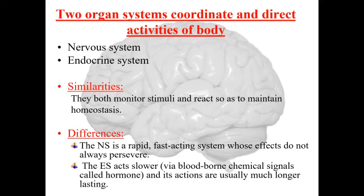These two systems react to maintain homeostasis. What is the difference between the nervous system and endocrine system? The nervous system is a rapid, fast-acting system whose effects are not always long-lasting. The endocrine system acts slower and its actions are usually much longer lasting.